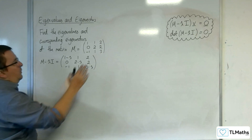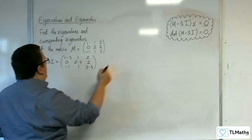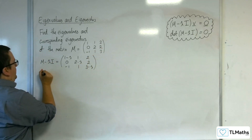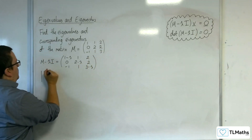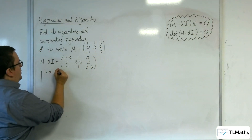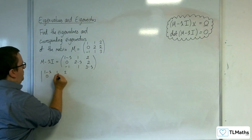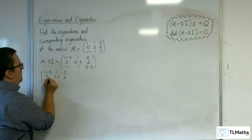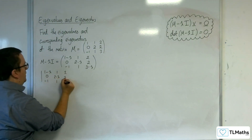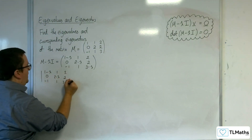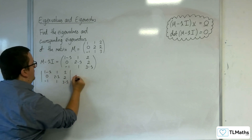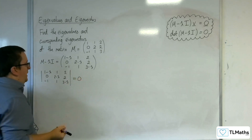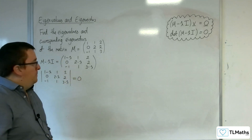We want to set the determinant equal to 0. So the determinant of the matrix (1-λ), 1, 2; 0, (2-λ), 2; -1, 1, (3-λ) must equal 0.